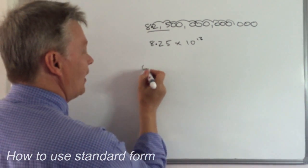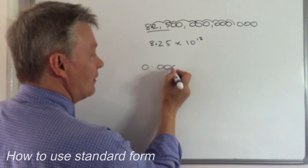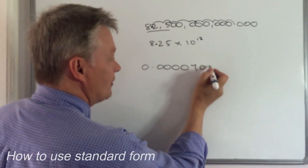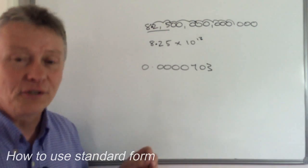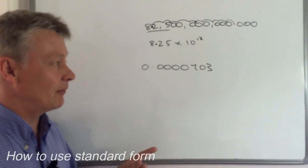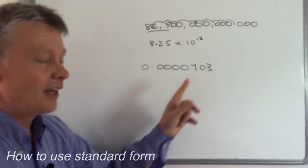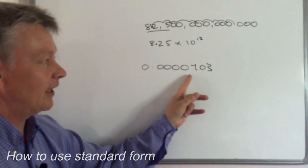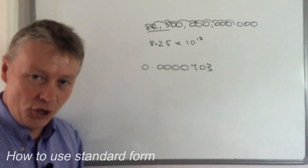So let's say I had 0.0000703. So I'm going to use exactly the same idea. I'm going to take my digits. And don't get confused between this zero in the middle here. I'm just going to take the digits of the number.